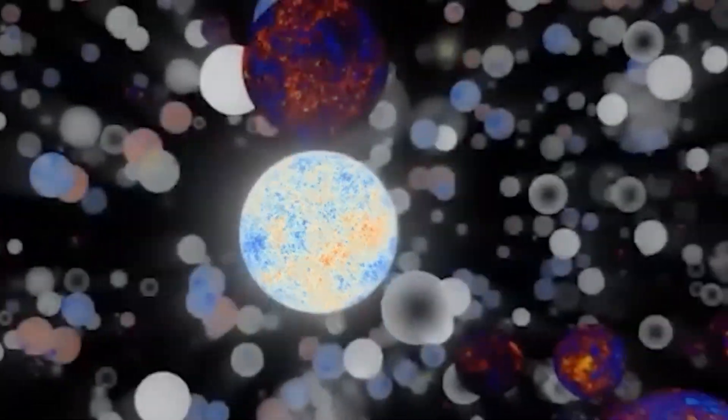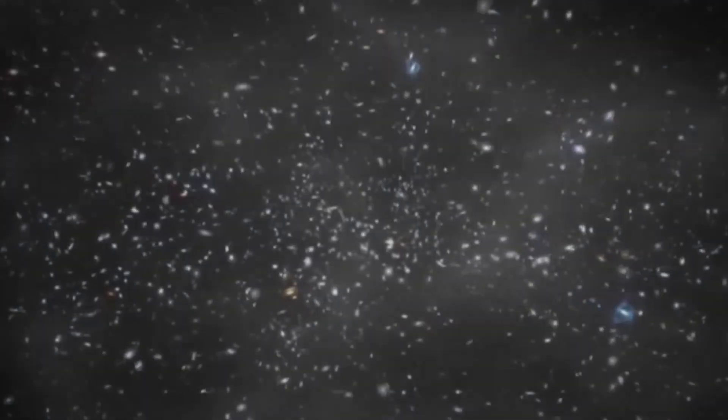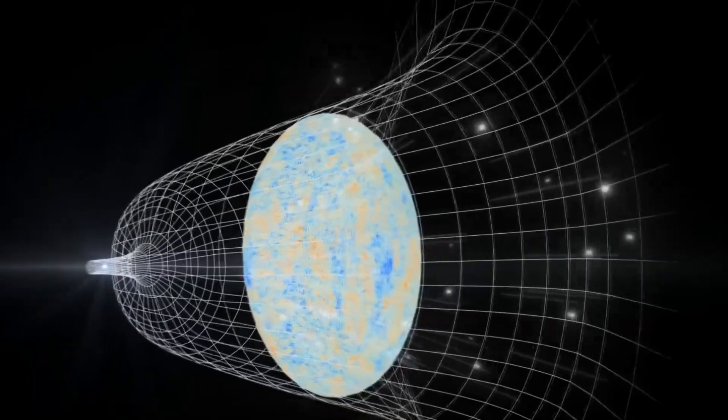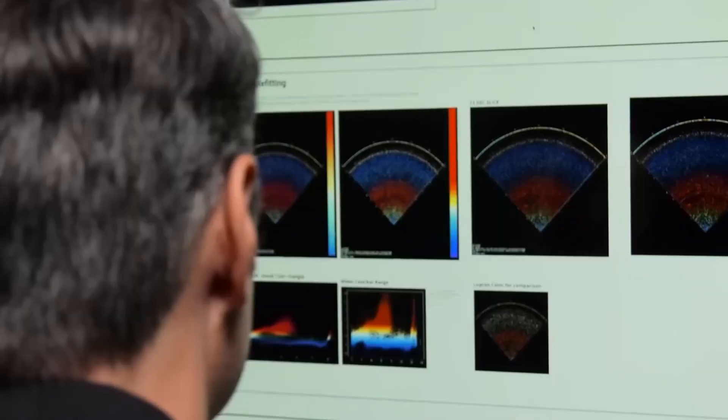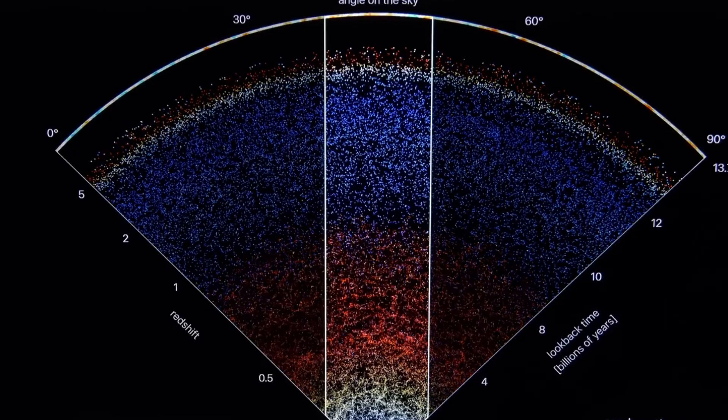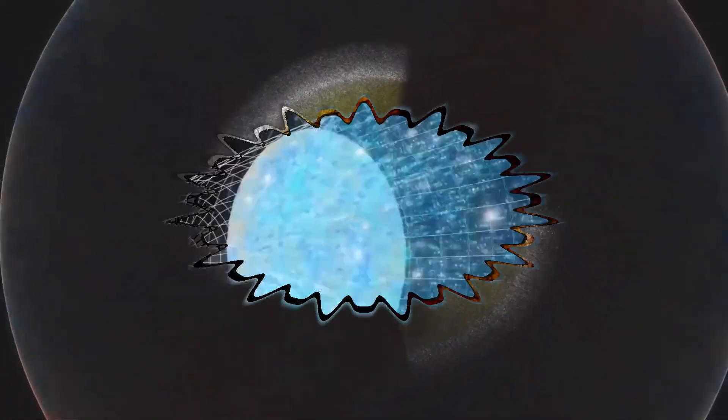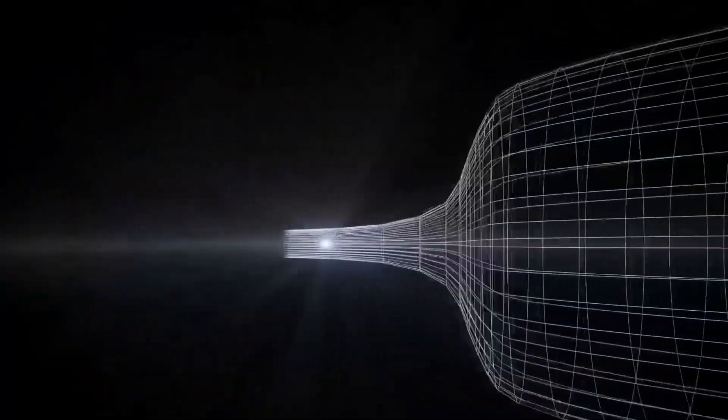Each universe in this multiverse may have unique properties such as different laws of physics or varying structures. If the multiverse does indeed exist, then everything we know about size, scale, and the nature of existence could be redefined. Our universe, with its hundreds of billions of galaxies, might be a mere speck in an infinite collection of universes, each as vast and complex as our own.